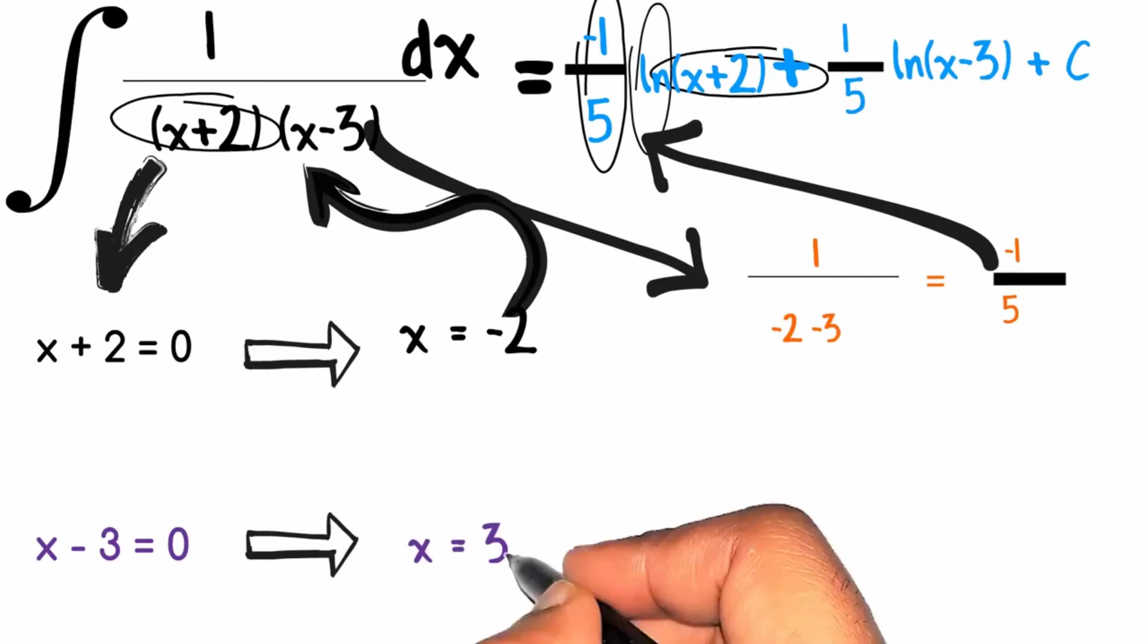We will put this x equals to 3 in the original question in a similar way by leaving the factor for which we are solving which is x minus 3. By doing this we will get our second coefficient which is 1 by 5. So we will write 1 by 5 ln x minus 3 plus c. This will be our answer.